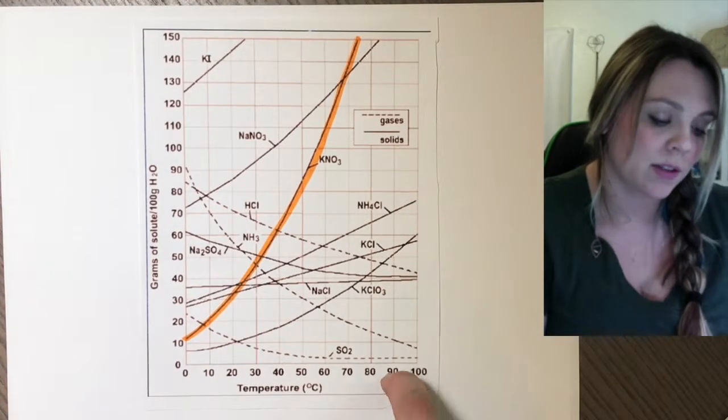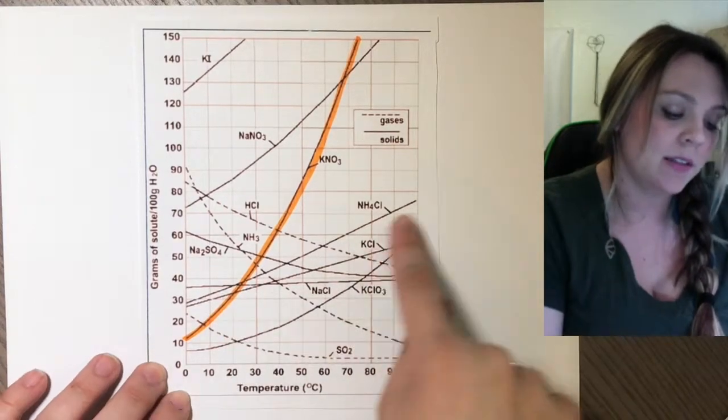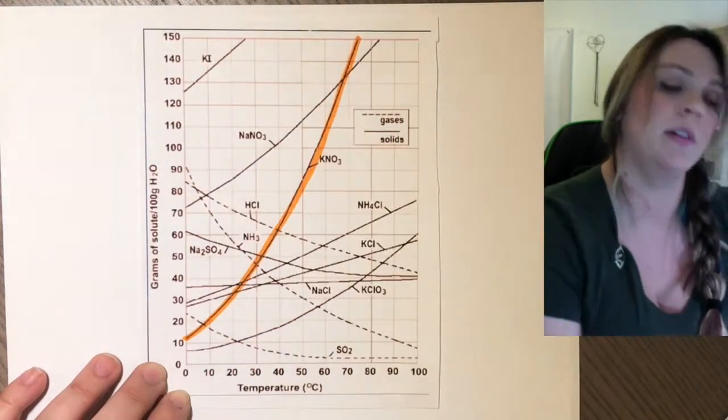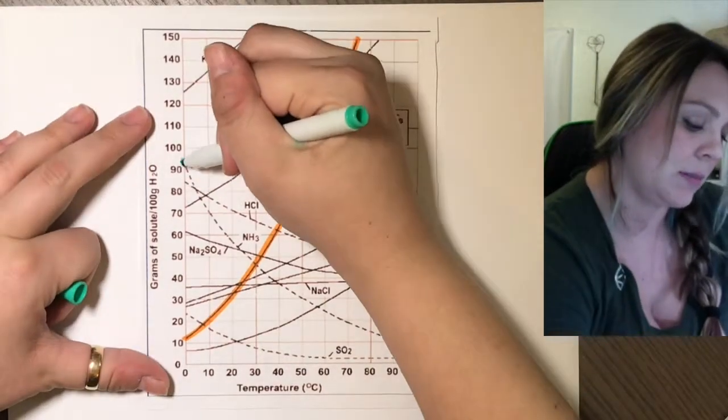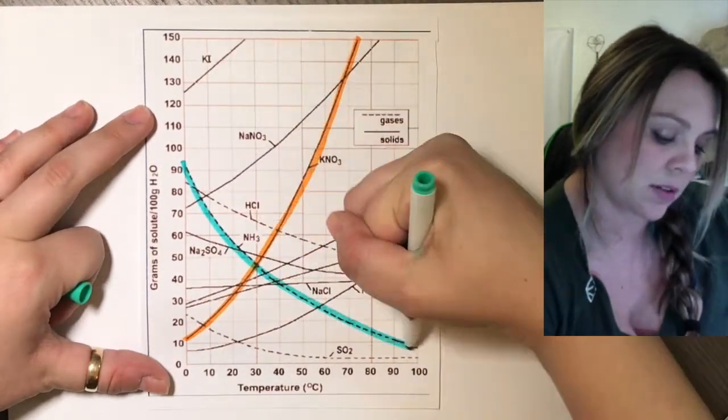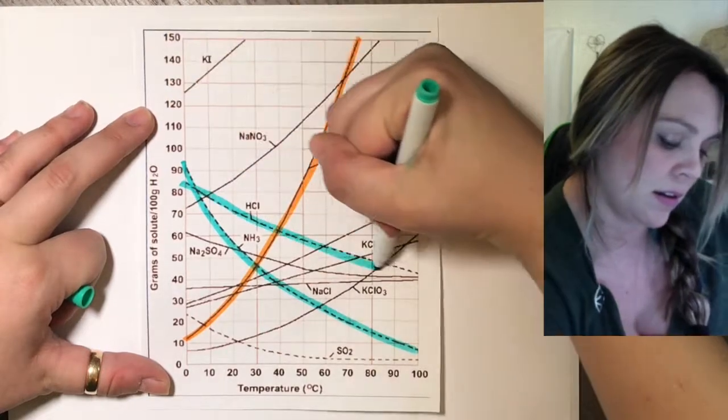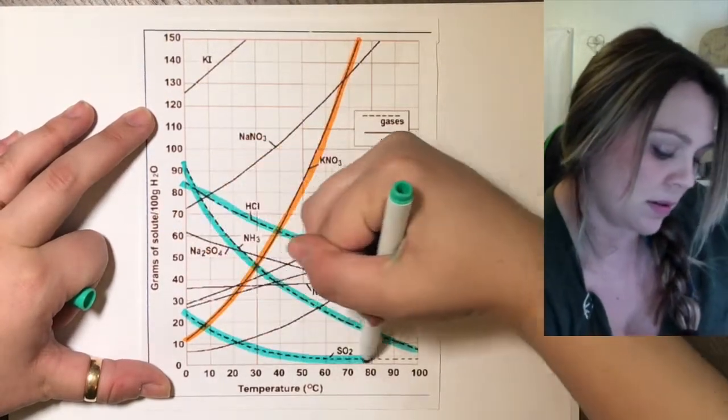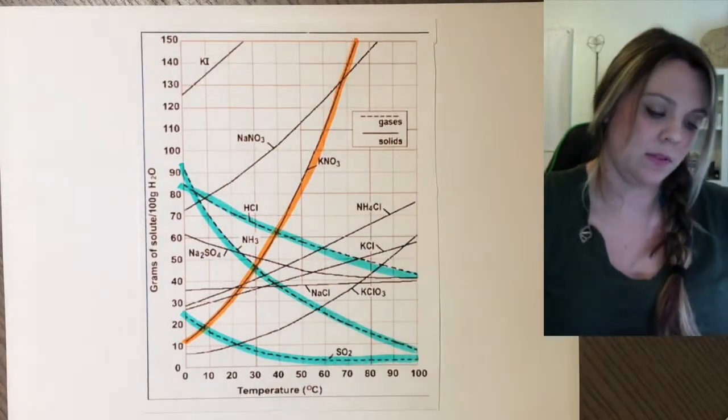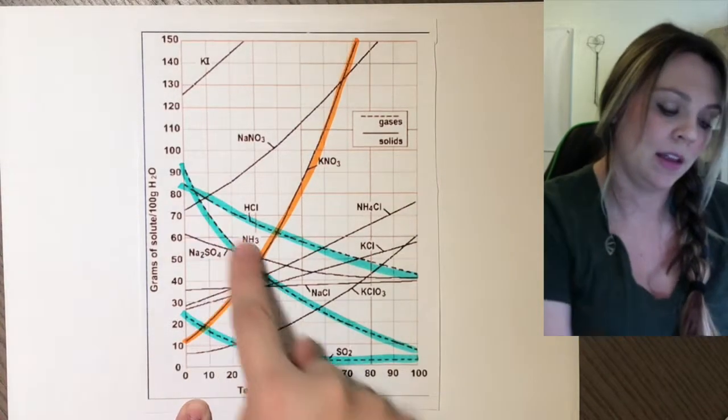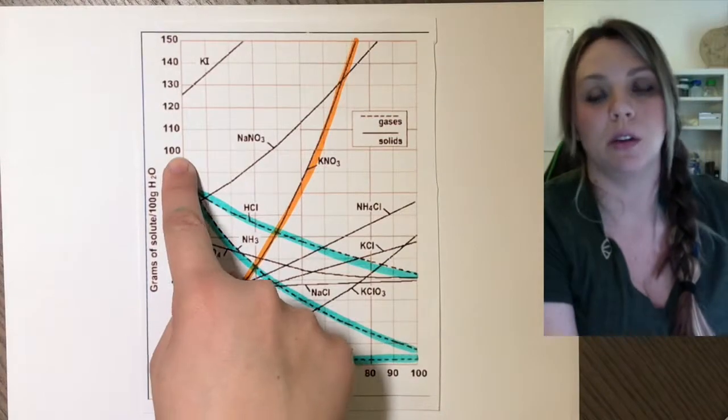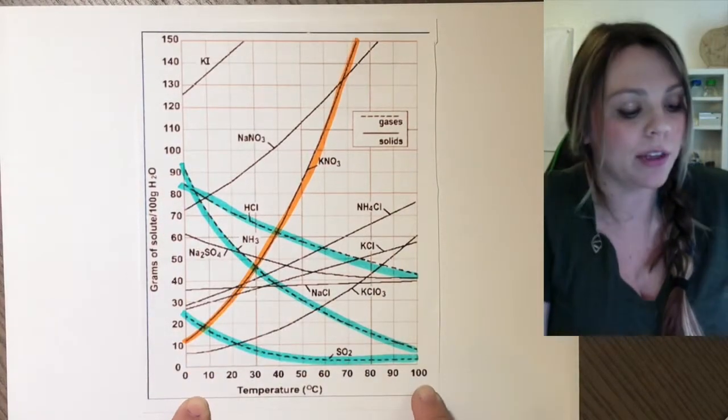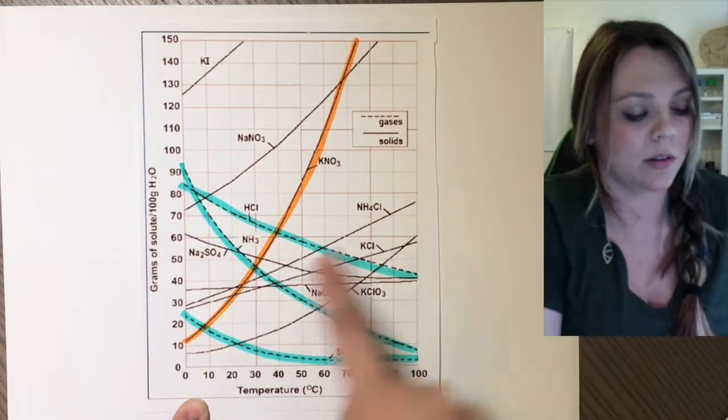One other thing to notice is most of these lines travel up. Except for a very select few. Some of them, as the temperature increases, they go down.